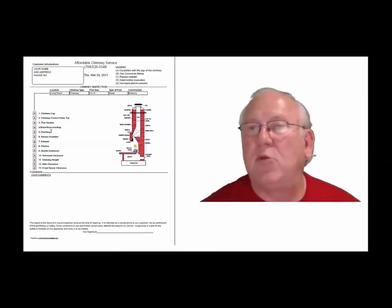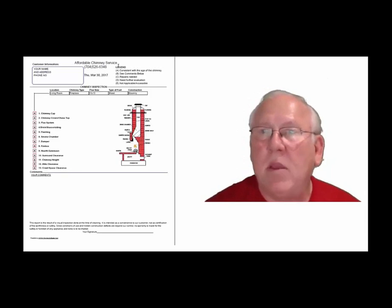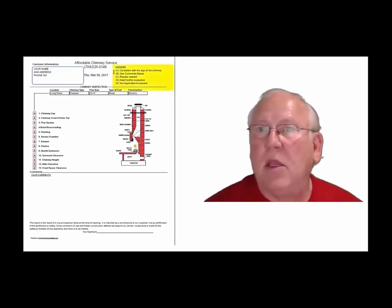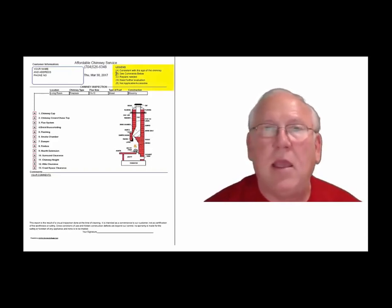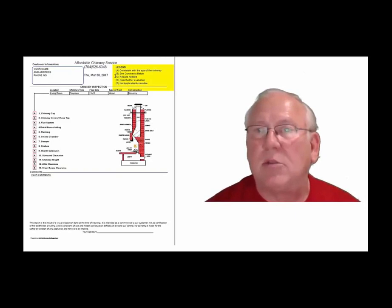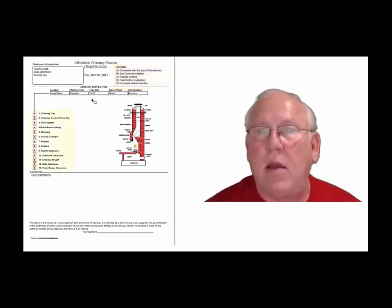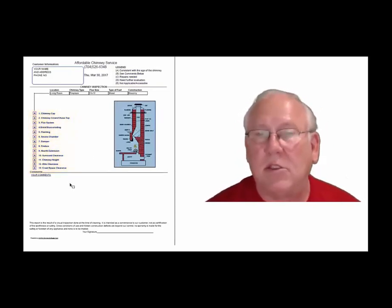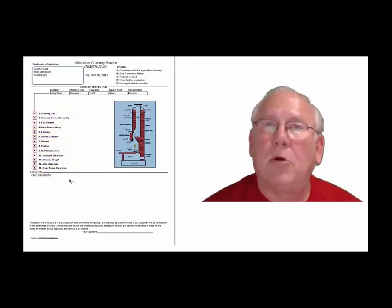Now let's take a look at the inspection report and see how it reads out. This is a generic report — this is exactly what you will get, only your information will be filled into all these blanks. The upper right-hand corner of the report is the legend. Each one of these initials pertains to something: A is consistent with the age of the chimney, maybe see comments below, C see repairs needed, D need further evaluation, or E not applicable. They're placed into the boxes next to the parts of the chimney that can be easily identified in this diagram, and you'll find my comments below.